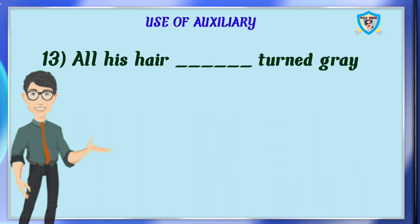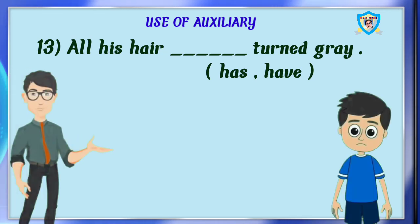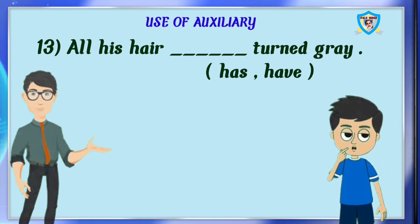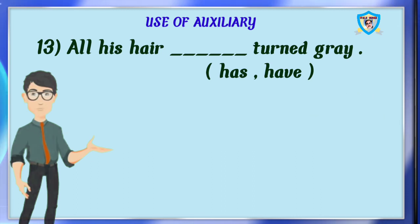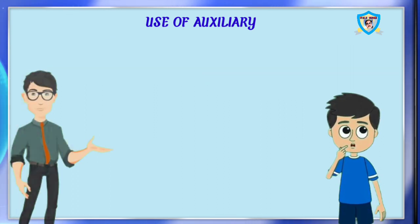Question 13: all his hair dash turn grey. Options are has, have. What is the right answer? The right answer is have. No — here, hair is always used in singular form, so the answer is has. All his hair has turned grey.